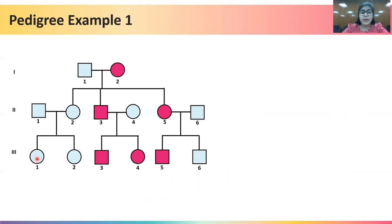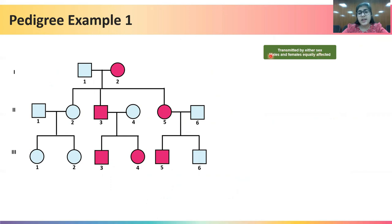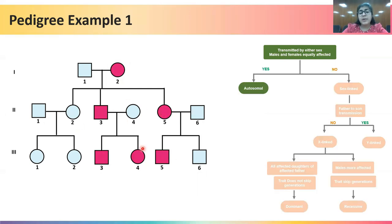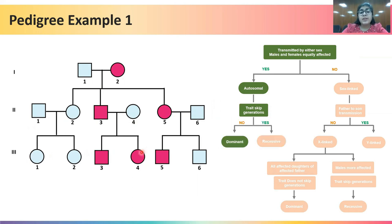In pedigree example one, following our logical flowchart, we first check whether the trait is transmitted by either sex and whether males and females are equally affected. Indeed, we can see the trait can be transmitted by both a female and a male, and both sexes are equally affected — so it is an autosomal trait. The trait is also not skipping any generations; affected individuals appear in all generations. Therefore, the trait is autosomal dominant.